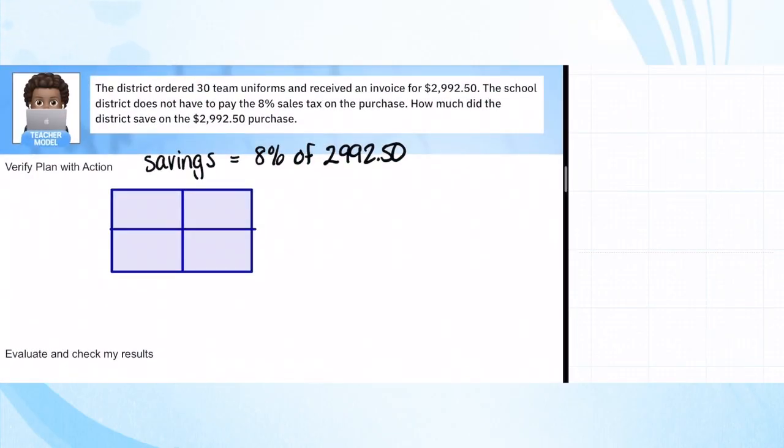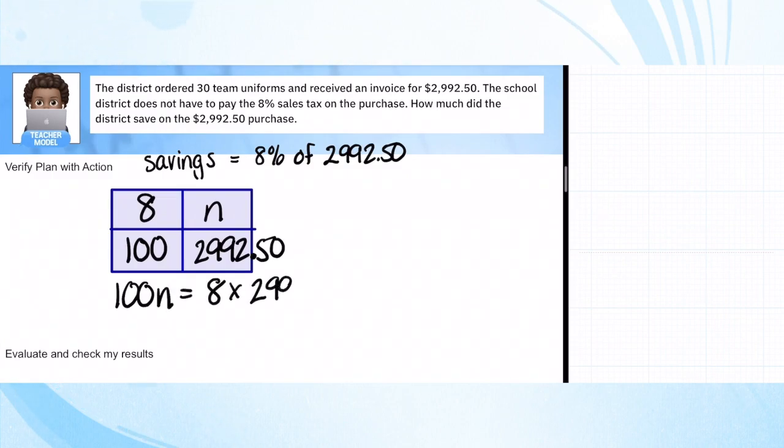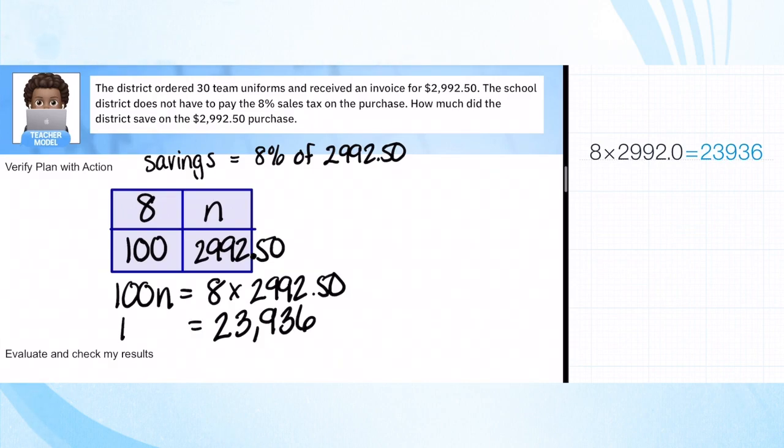I've set up our ratio table to figure out what is 8% of our total purchase. That's the part we're saving. So 8% is our first ratio, 8 out of 100, and we want to know that part out of the total cost. When I cross multiply I get 100N is equal to 8 times our total purchase. For that we'll use our calculator. 8 times 2,992 dollars and 50 cents, and we're going to get $23,936.